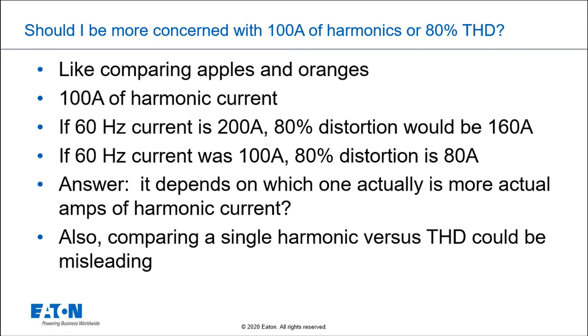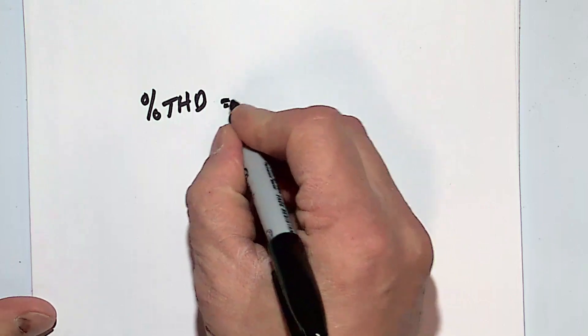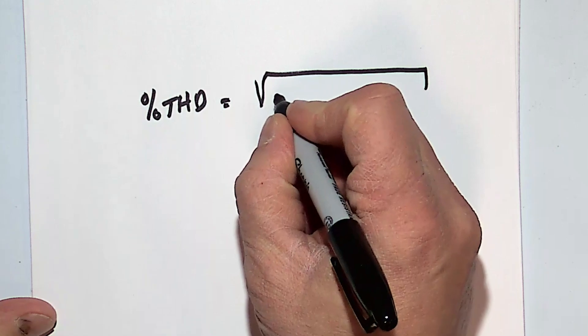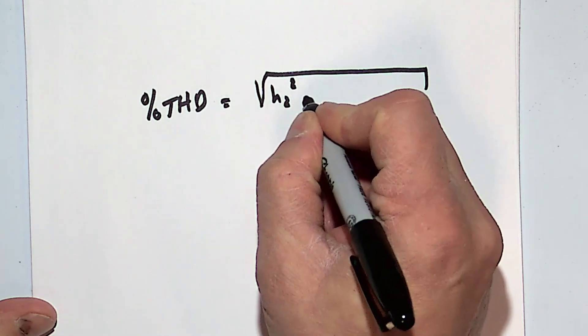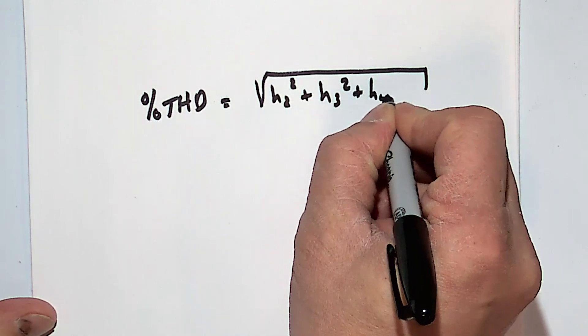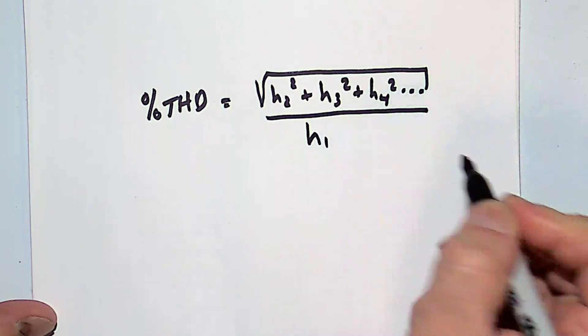So let's take a look at an example on the printout here. So how do I calculate, first of all, percent THD? Percent THD equals the square root of the sum of the squares of all of the harmonics. So H2 squared, which is the second harmonic, plus H3 squared, plus H4 squared, dot dot dot, divided by H1, or the fundamental.